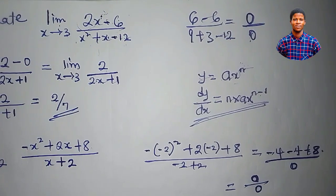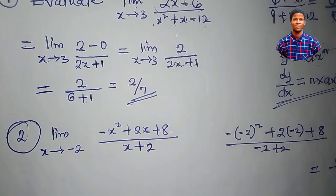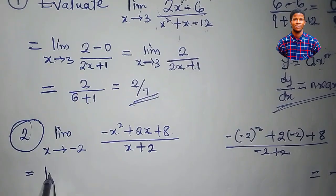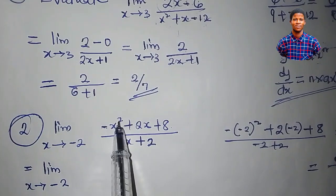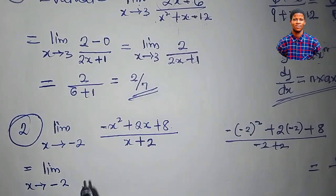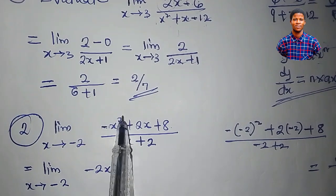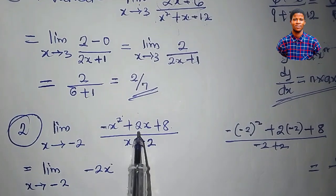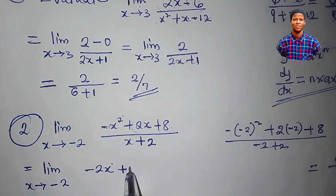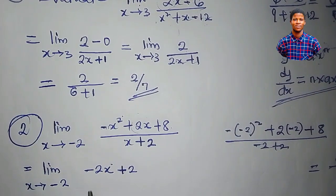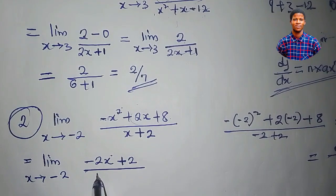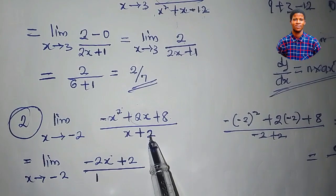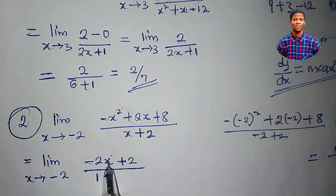The limit will be equal to the limit as x approaches negative 2. Differentiate minus x squared to get minus 2x. Differentiate 2x to get 2. Differentiate 8 to get 0. Differentiating x plus 2 with respect to x gives 1, and differentiating the constant 2 gives 0. So all we have is minus 2x plus 2 all over 1.